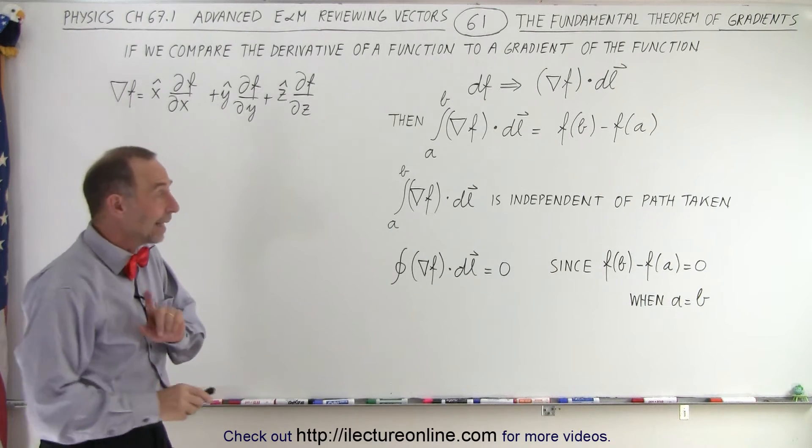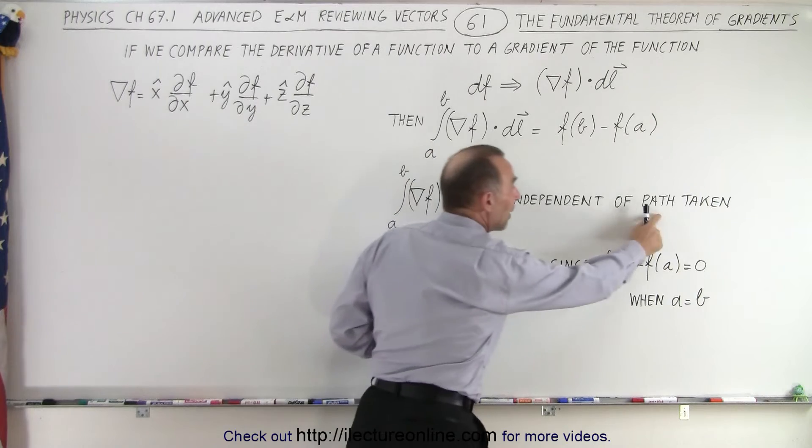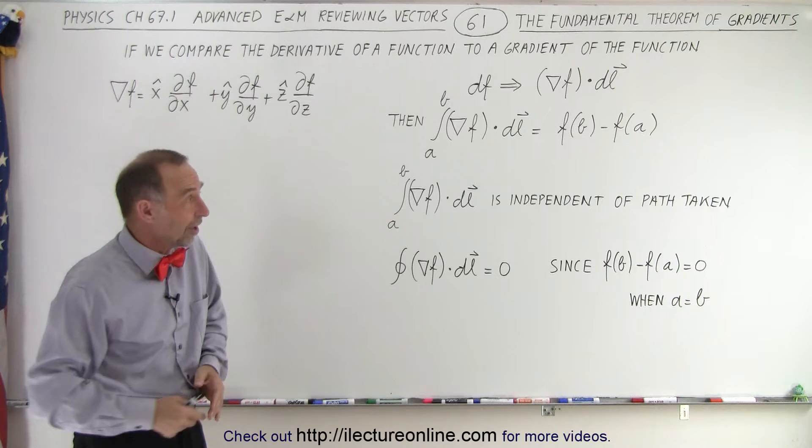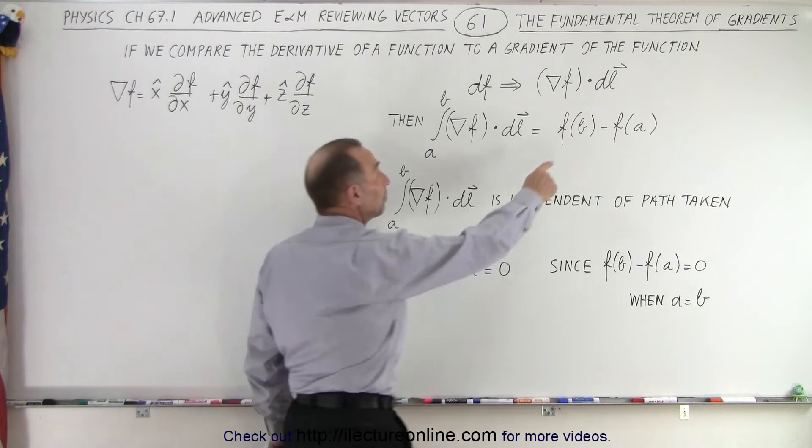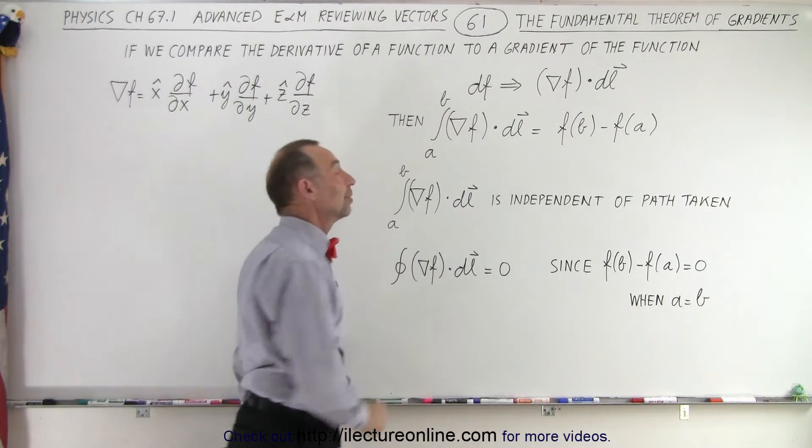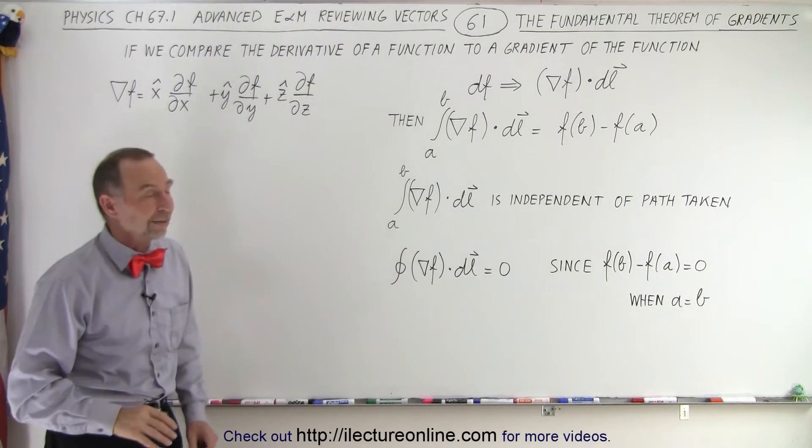And it turns out that it's independent of the path taken. It doesn't matter how you get from A to B because that's essentially what the theorem should then say. You simply need to know the two endpoints, evaluate the function at the two endpoints, and you get the same as the integral of the gradient of a function dot DL.